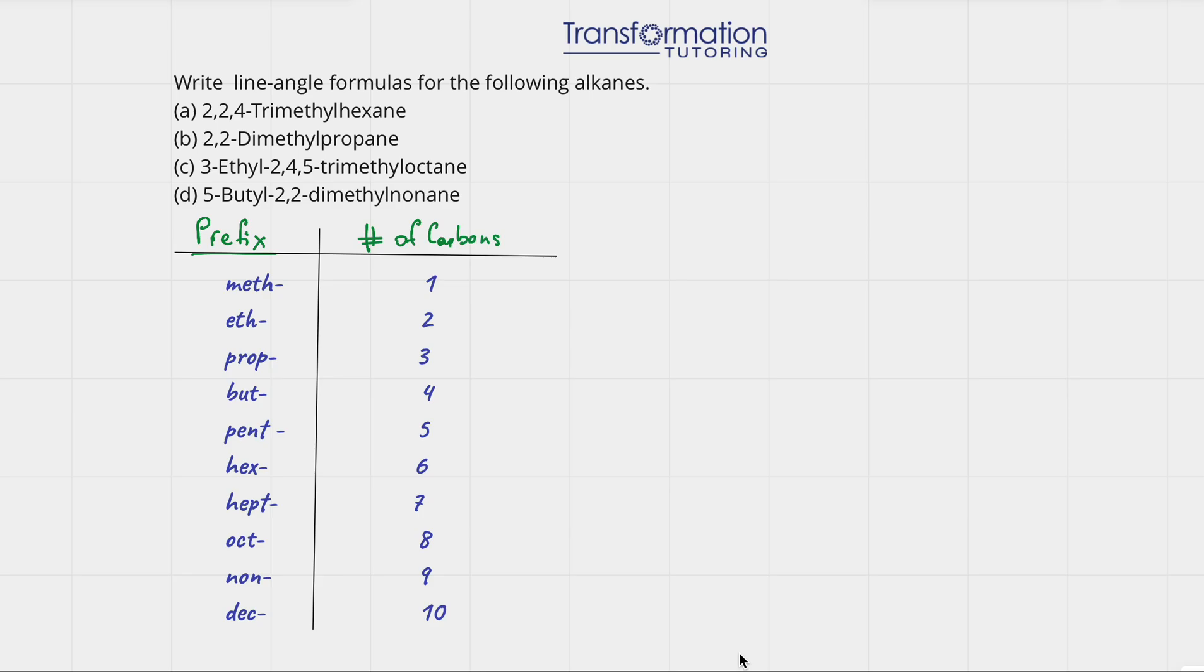Write line-angle formulas for the following alkanes. Here in A we see that it's 2,2,4-trimethylhexane and the first thing that we need to do is look at the parent name which is at the end of the name, and here it is hexane.